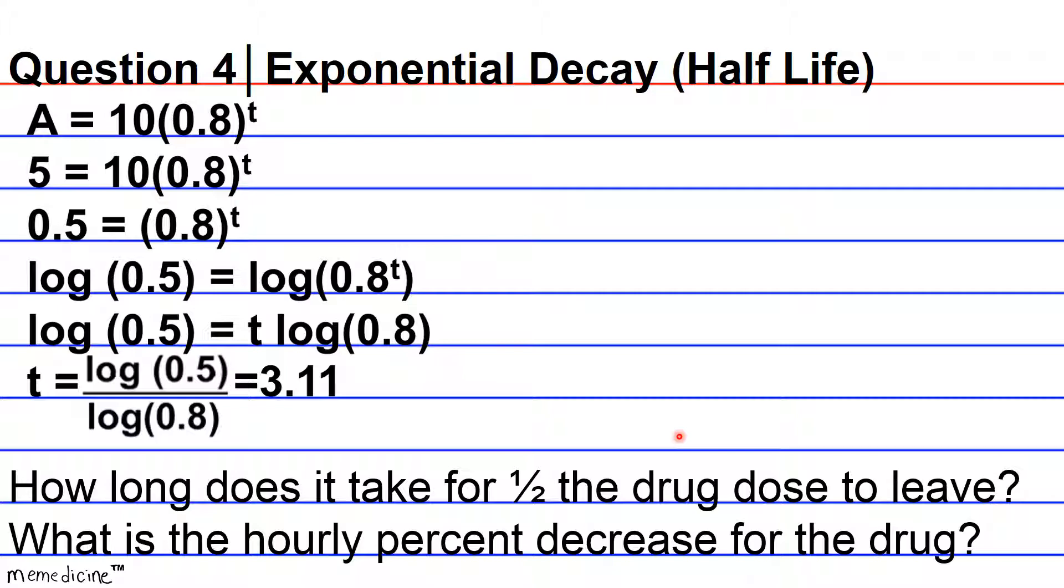Now to find the hourly percent decrease for the drug, what we're first going to have to do is look at the base for the original exponential function. And if you purchase some of my other CRAM sessions and you study decimal and percent conversion, you would know that 0.8 is another way of representing 80%.